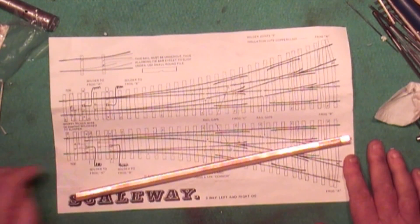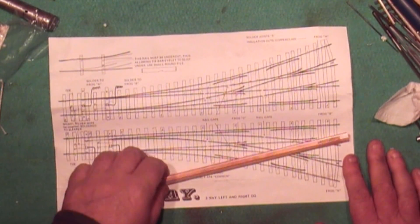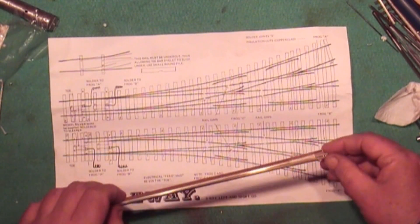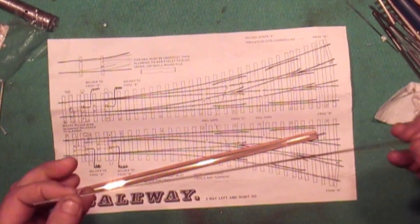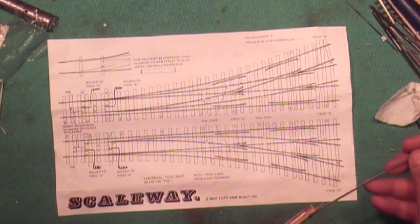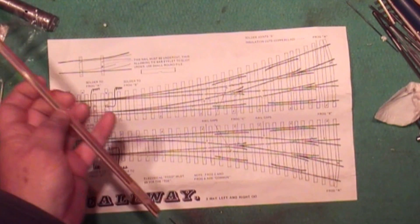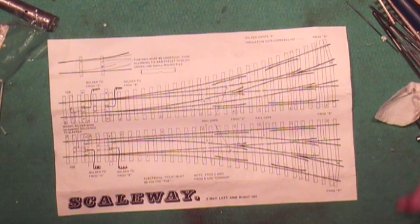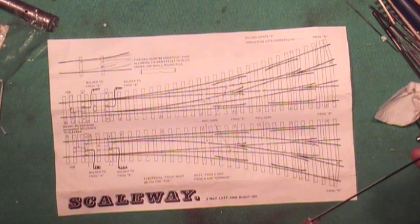It comes with all the pieces you need to build the point up. Unfortunately, the track I've got here is not code 100, this is fine scale. I need code 100 so I can get some rail. That's easy enough. One flexible track should do it I think. Yeah, one piece of flexible track will do it and I've got that, so I'll be using that rail.